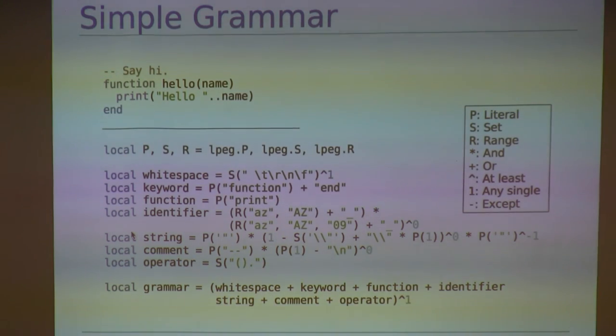For white space, we're going to look for one or more white space characters using the set function. For keywords and functions, we're just looking for specific words literally. For identifiers, strings, and comments, we're just going to reuse those same patterns that I showed you earlier. And finally, for operators, we're going to be looking for one in a set of punctuation characters. Now, here's the cool part. We can combine all of these tokens into a single LPEG pattern that matches the entire Lua source code example at the top.